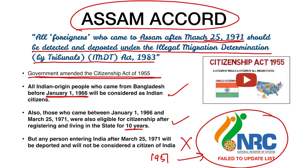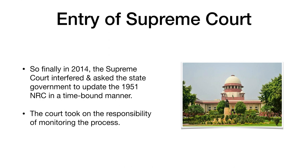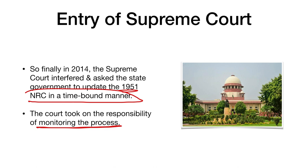The government was finding it hard to determine who was an illegal immigrant and who was not. Finally, in 2014, because the NRC was not updated, the Supreme Court interfered. It asked the state government to update the 1951 NRC in a time-bound manner. The court did not leave it to the government — it took on the responsibility of monitoring the process, saying it would monitor the preparation of the NRC list.